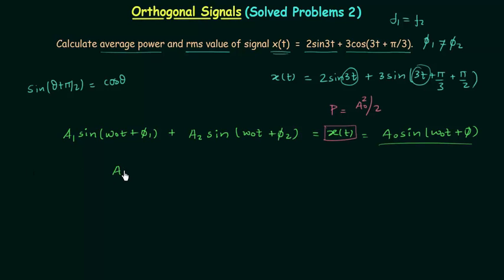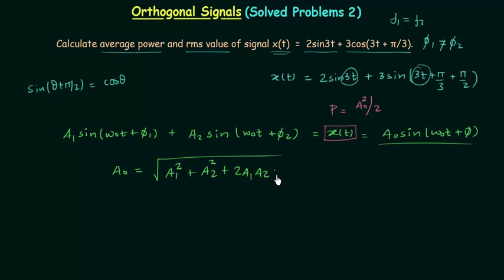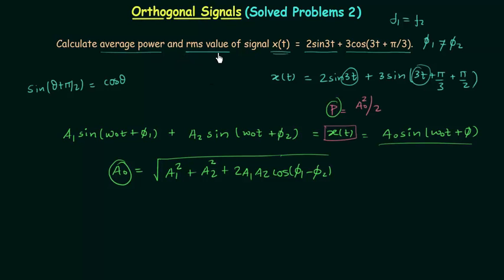a0 is given by the formula: a0 = √(a1² + a2² + 2·a1·a2·cos(φ1 − φ2)). Using this formula we can easily calculate a0. I will explain how we got this result at the end of this lecture, but first we will calculate the average power P and RMS value.